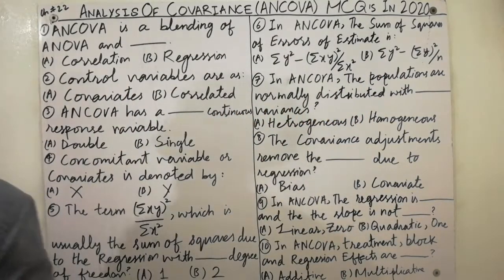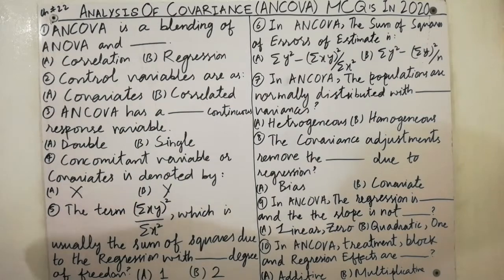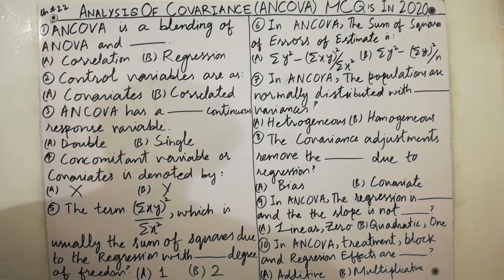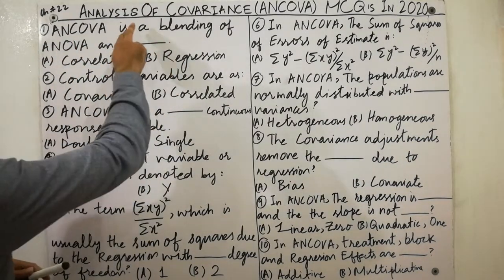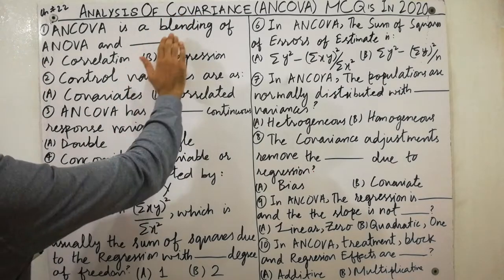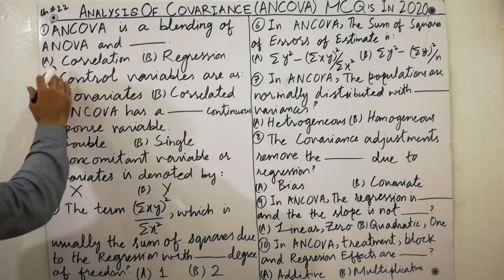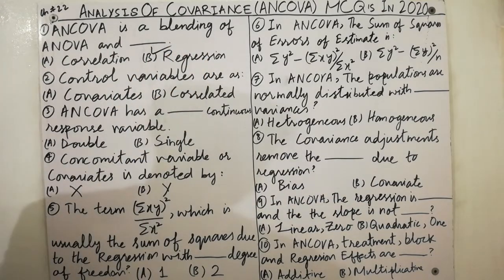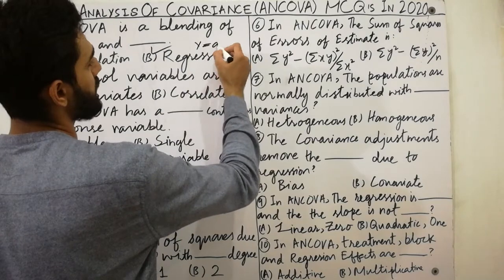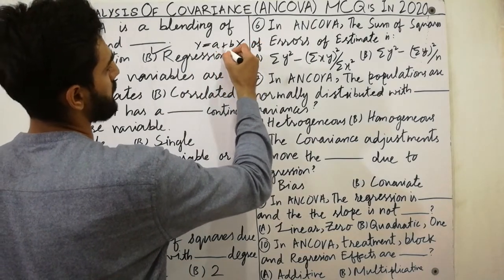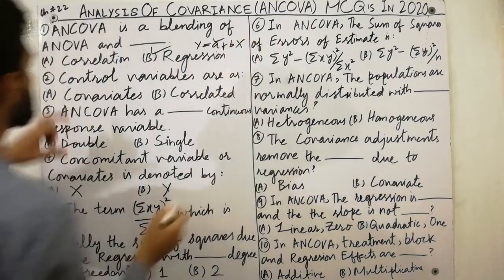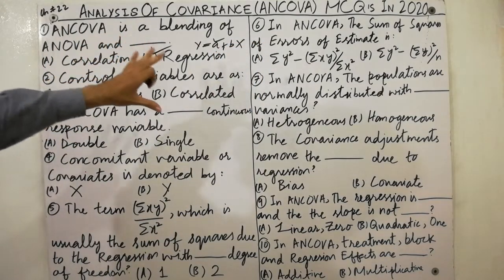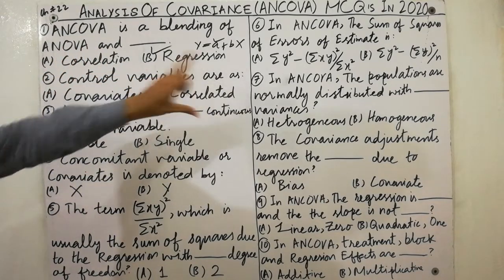Here is the first MCQ — very important. ANCOVA, which stands for Analysis of Covariance, is the blending of ANOVA and regression. Must remember that. Regression we know as y = a + bx. Must remember: ANCOVA is the combination and blending of ANOVA and regression.